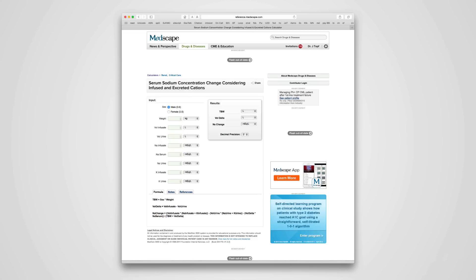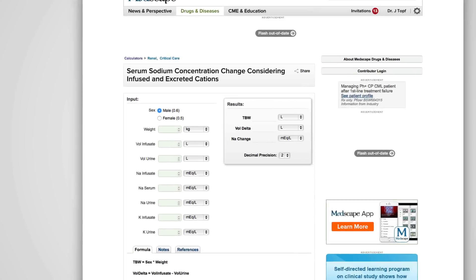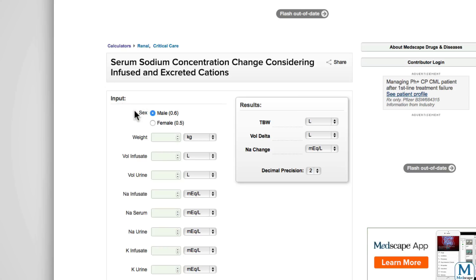This is usually not accounted for in medical calculators. Here's a typical calculator from Medscape that estimates serum sodium concentrations after receiving different IV fluids. If you focus in on how they estimate the total body water, they account for the gender, they account for the weight, but at no point do they account for the obesity of the patient.